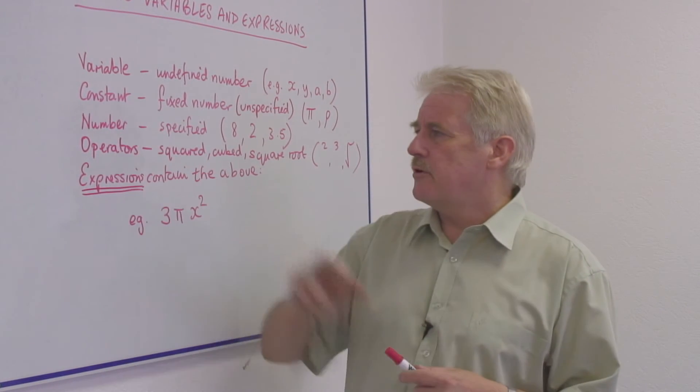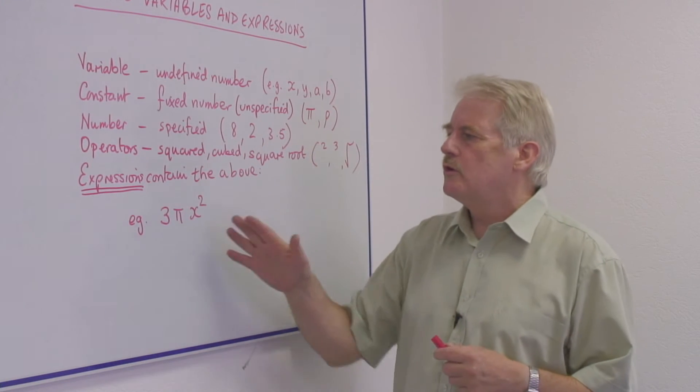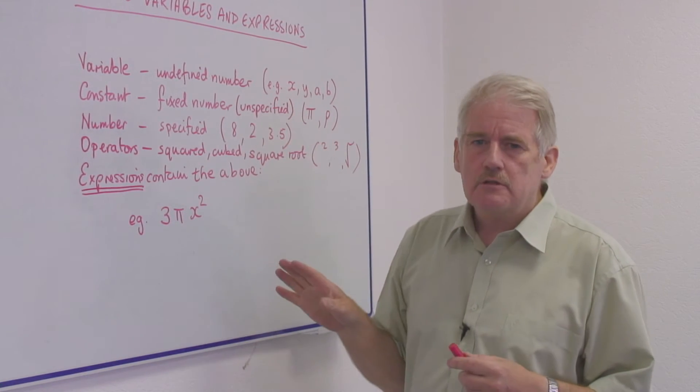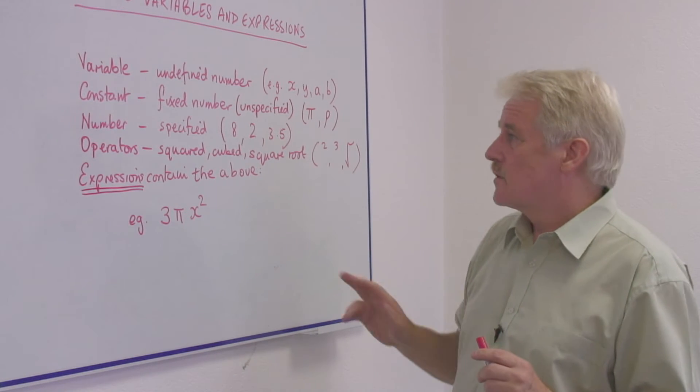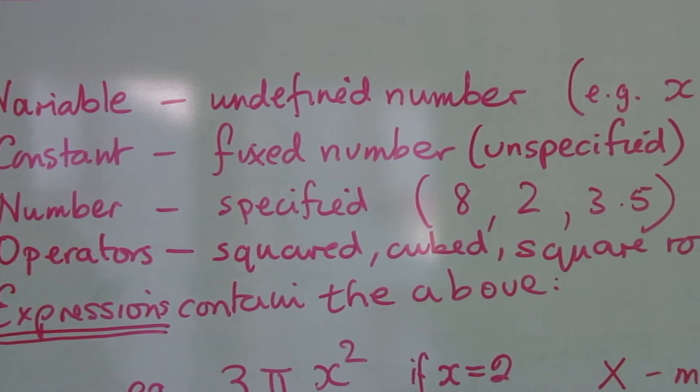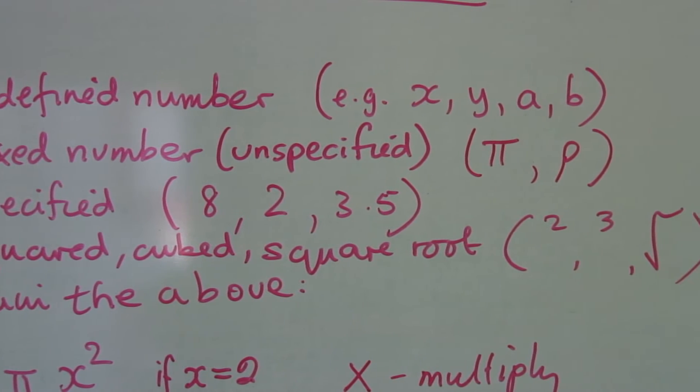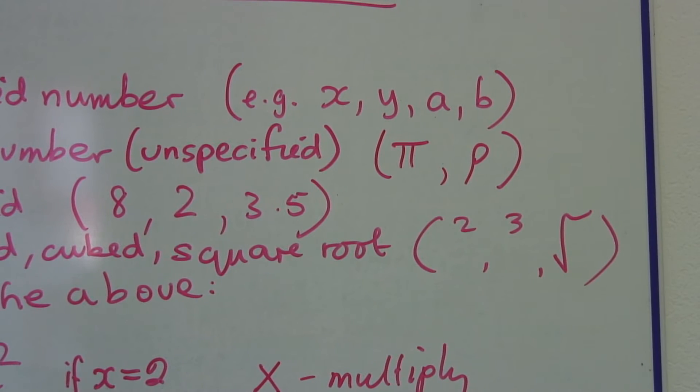And an operator. An operator tells you what to do with the variable next to it, or with the numbers. So it could be squared, cubed, square root, and these are the symbols. So an expression will contain those.